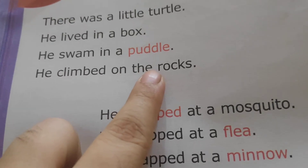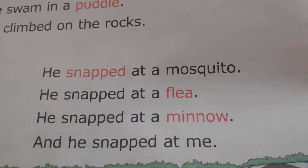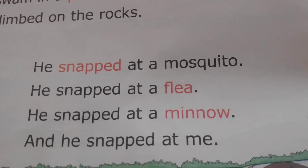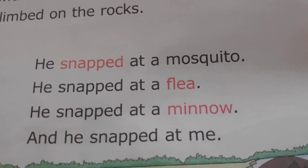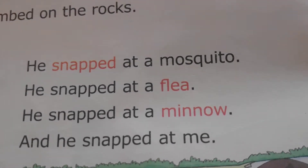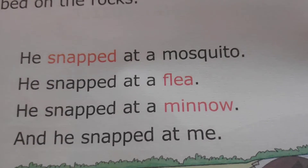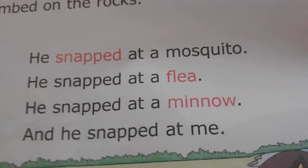He snapped at a mosquito — he used to strike at the mosquito. He snapped at a flea; flea is also an insect. So he used to catch mosquitoes and fleas. He also caught a minnow. Minnow is a fish — it is a fish, a small fish found in puddles or in the pond. And the poet says he also snapped at me; he tried to catch me as well.